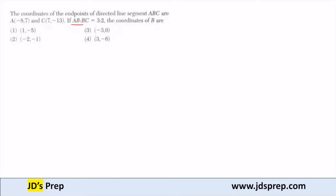Because AB to BC is 3 to 2, that means B is three-fifths the distance from A to C.